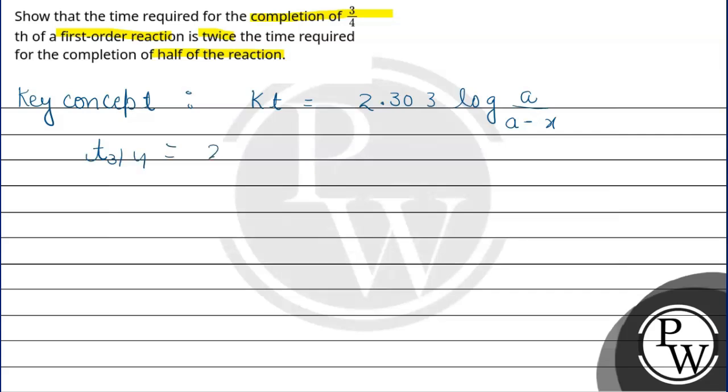So it will be 2.303/K log(a/(a-3a/4)). This whole is basically how much is remaining and this is how much has completed. So this equals 2.303/K because this will be 4a minus 3a, which is a/4. The a's will cancel, so it will be log 4.